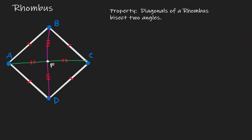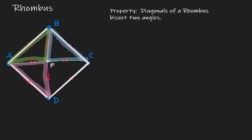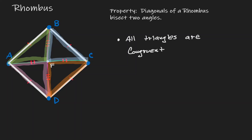Now what do we know about the four triangles within the rhombus? We have triangle ABF, triangle BFC, triangle AFD, and triangle DFC. We can see that all of those triangles are congruent by the side-side-side congruence theorem. So if all triangles are congruent to each other, then corresponding parts are congruent to each other.